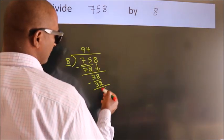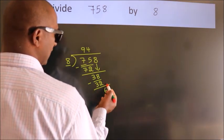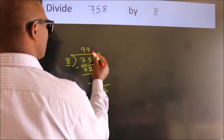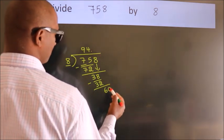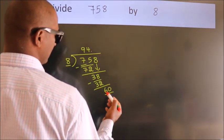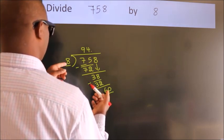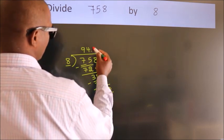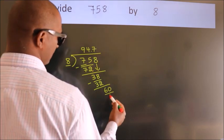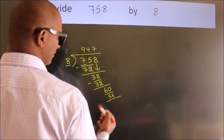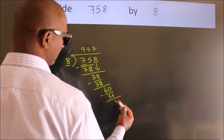After this, no more numbers to bring down. So what we do is, we put a dot and take 0. 60. A number close to 60 in the 8 table is 8 sevens, 56. Now we subtract. We get 4.